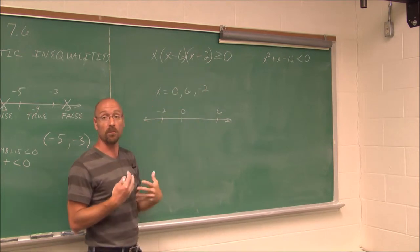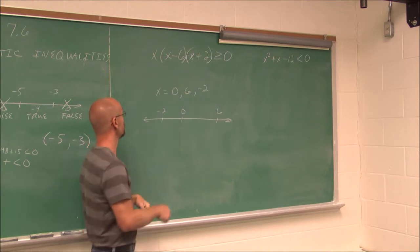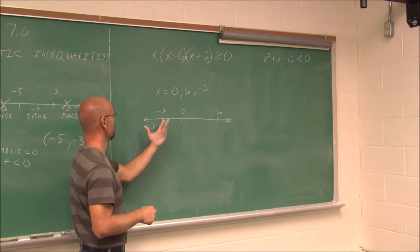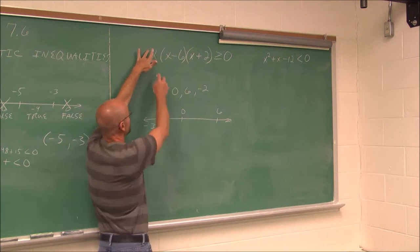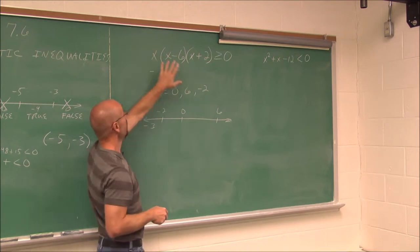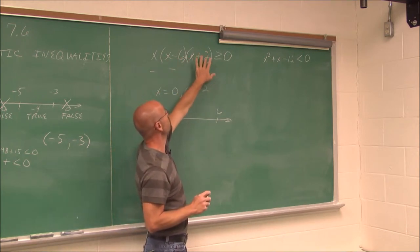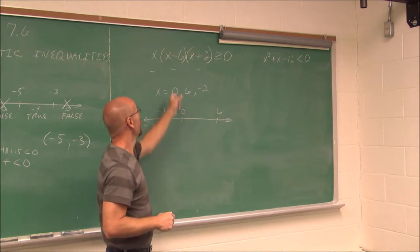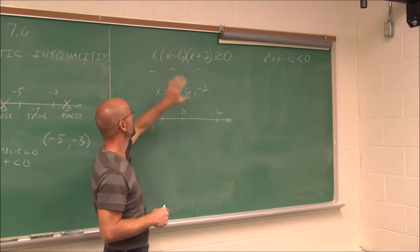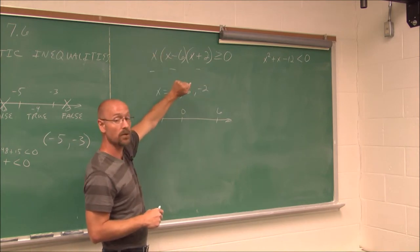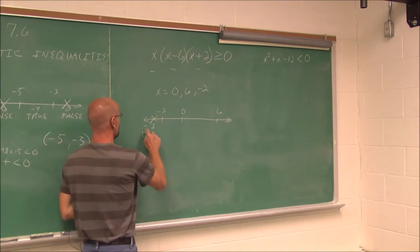Let's test negative 3 — that's a value less than negative 2, so it's in this interval. If I put in negative 3, this value would be negative. Negative 3 plus negative 6 is a negative value. Negative 3 plus 2 is a negative value. A negative times a negative times a negative is a negative value — we have an odd number of negatives, which makes this multiplication negative. Negative values are not greater than 0, so this interval is false.